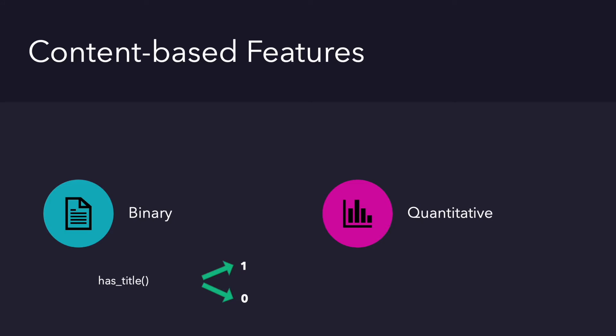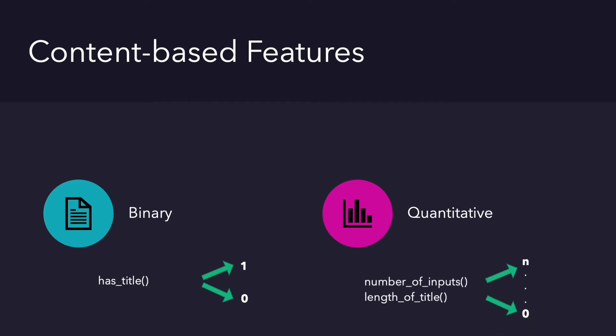One means yes and zero means no for binary features. For example, 'has title' or 'has input HTML tag' describes if the content has an input tag or not — if yes, the value is one; if not, zero. The other type is quantitative features, which can have any value from zero to n — for example, number of input tags or length of title.